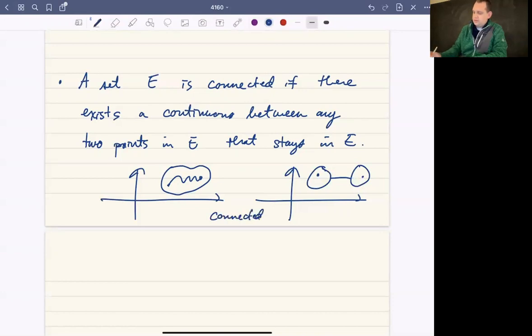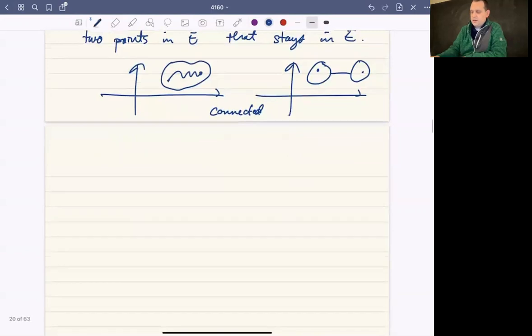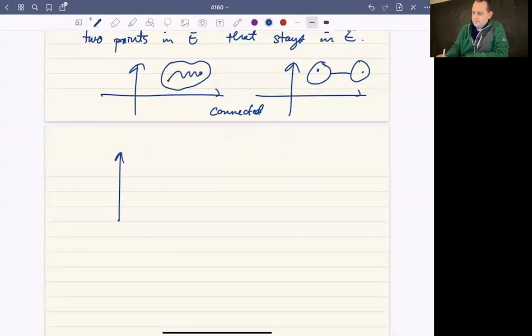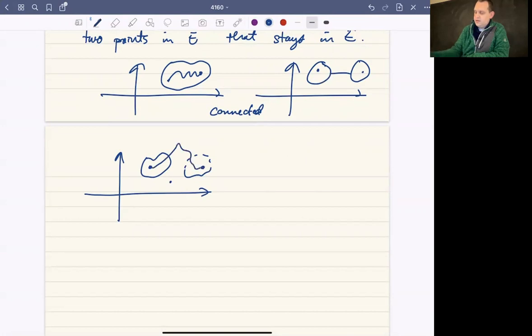Of course, to be not connected, to be separated, which is the word that we use, that's where you have something like two parts. Maybe there's an isolated point. But there's no way that you can get from a point here to a point here. Whatever continuous line you draw, it's going to go outside of the set. And so these two regions are not connected.